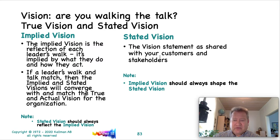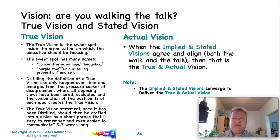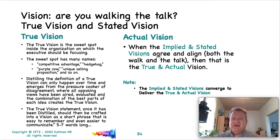They were notorious for overworking and undercompensating their workers, which probably is part of what helped lead to their downfall. The true vision is the sweet spot inside the organization, and that's what the executives and the leadership should be focusing on. It's got tons of names — it could be competitive advantage, hedgehog, purple cow, unique selling proposition, and so on.